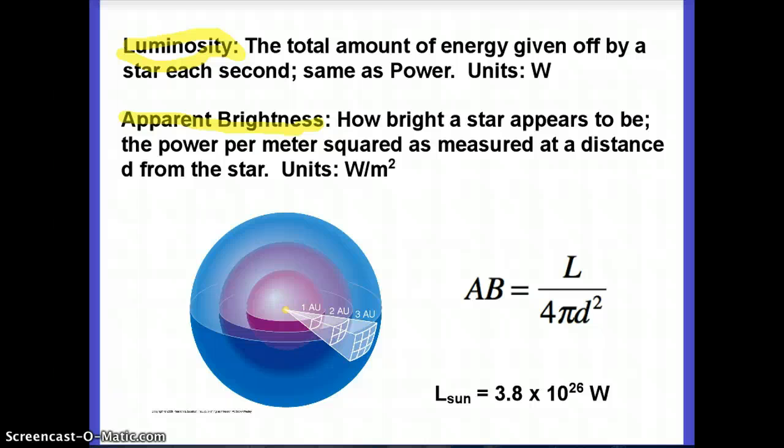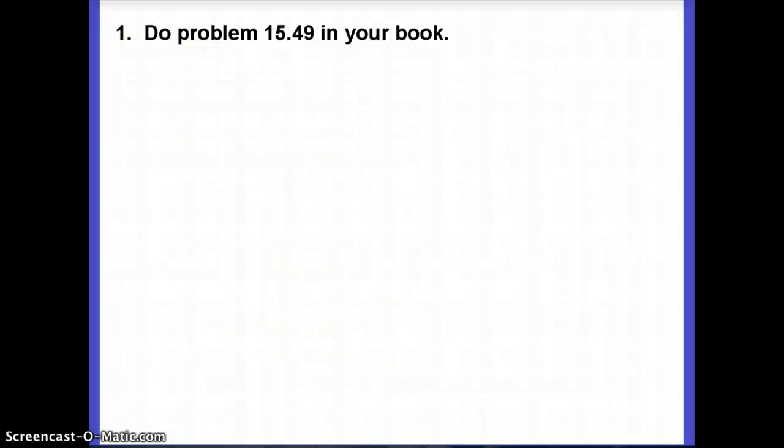So how do we do problems with this? I'm going to look at problem 15.49 in the book. We'll go through that. This is number one in your packet. In 15.49, we're talking about Alpha Centauri, our favorite nearest star other than the Sun. And we're told that it is 4.4 light years away. So that's the distance to it.